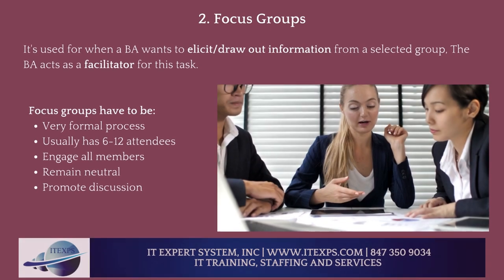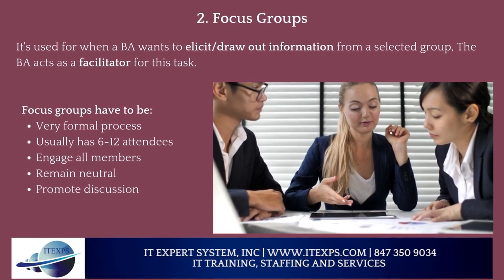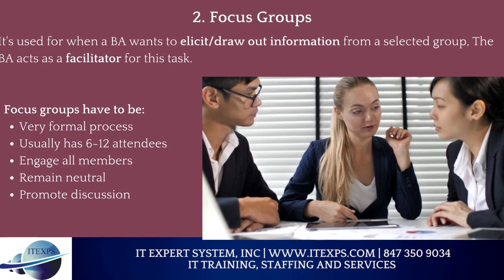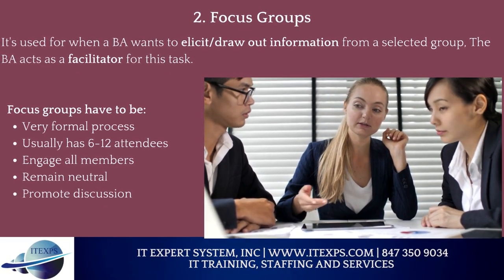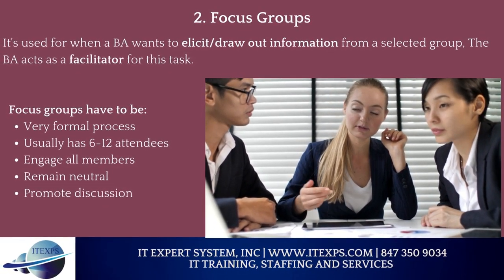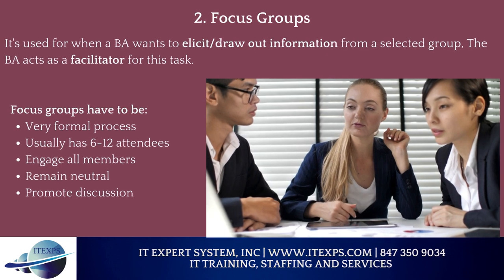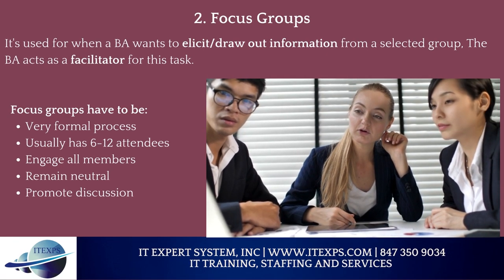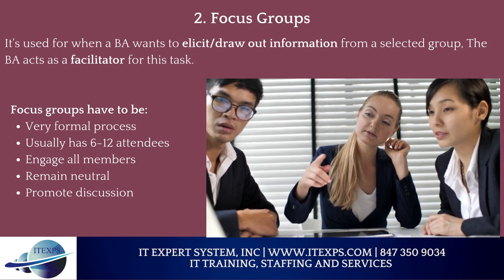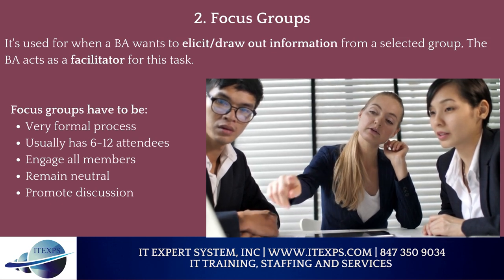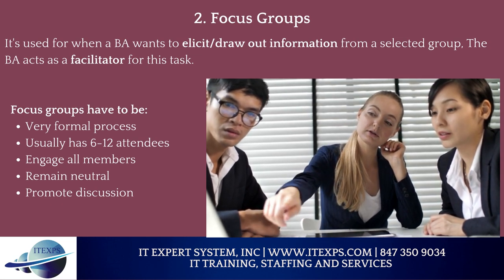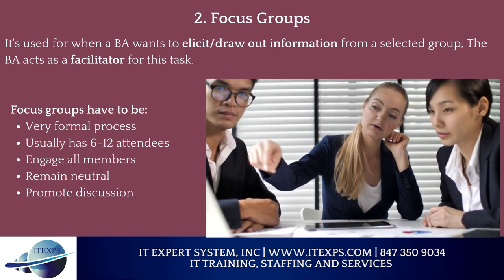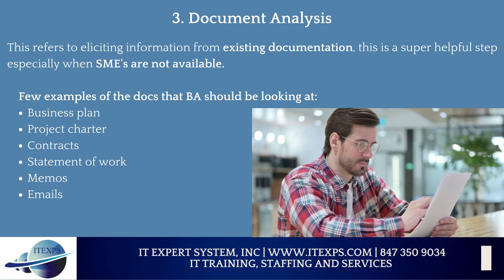Number 2: Focus Groups. This is used when a BA wants to elicit and draw out information from a selected group. The BA acts as a facilitator for this task. Focus groups must be a very formal process, usually with 6 to 12 attendees, and should engage all members. Make sure to remain neutral and promote discussion.